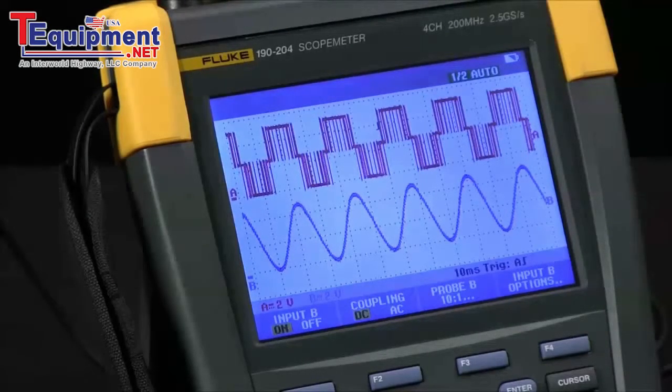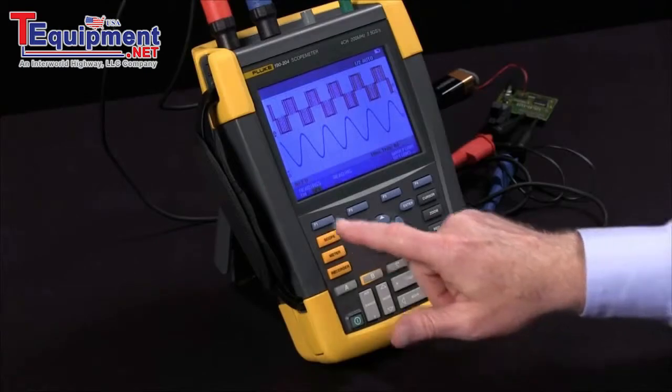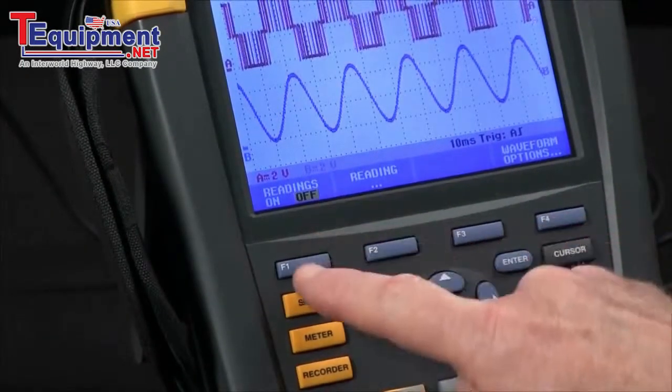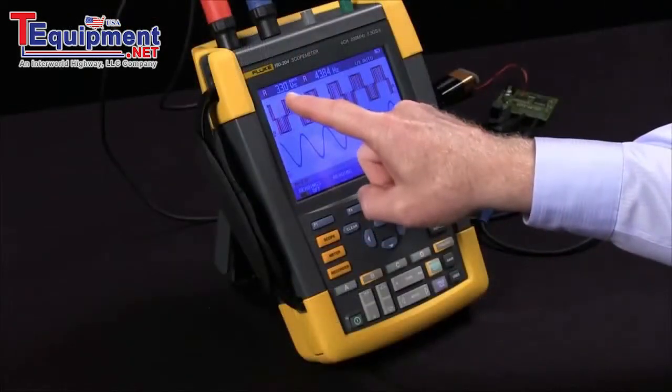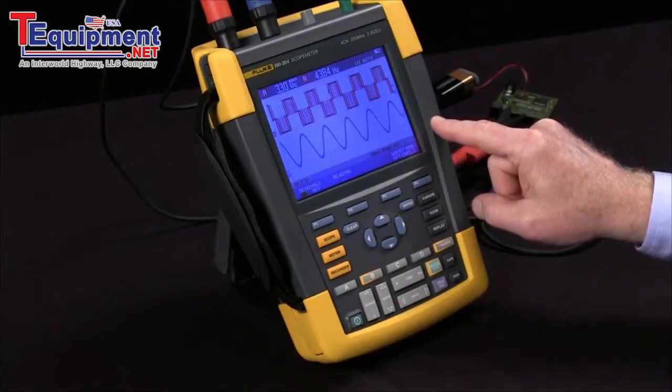The next thing I want to do is to make some measurements. If I hit the scope button, I've got readings now for F1. They're turned off, F1 turns them on. I now see voltage and frequency for channel A. To modify those,